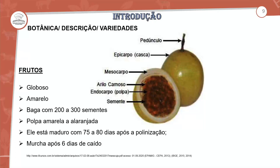Esse parâmetro de 70 a 80 dias é o que usamos para verificar o processo de amadurecimento, pois alguns frutos do maracujá não têm aparência amarela no epicarpo, que é a casca. Então esse epicarpo já é coletado com coloração verde. O parâmetro está nas descrições dos processos de amadurecimento do fruto, variando de 75 a 80 dias dependendo da variedade. O fruto murcha após seis dias decaído.